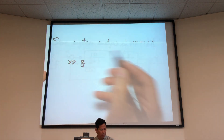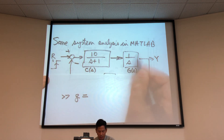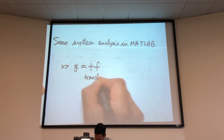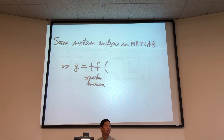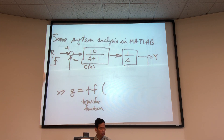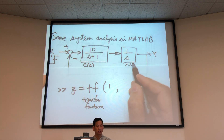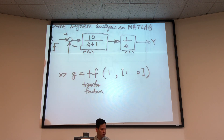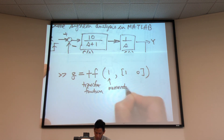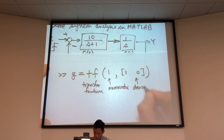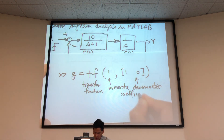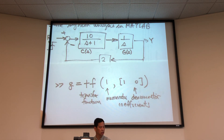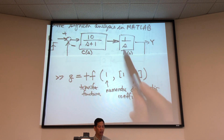We're going to do system analysis using MATLAB tools. First, let's describe all the different model pieces — the process G, controller C, and feedback F. To describe G, there's a command called TF, which stands for transfer function. I have to tell it the parameters: the numerator is 1 and the denominator has coefficients for S — think of this as S to the one and S to the zero. These are the coefficients of the polynomial model.